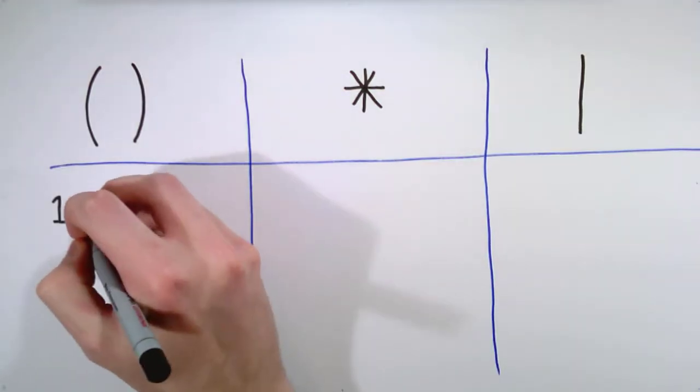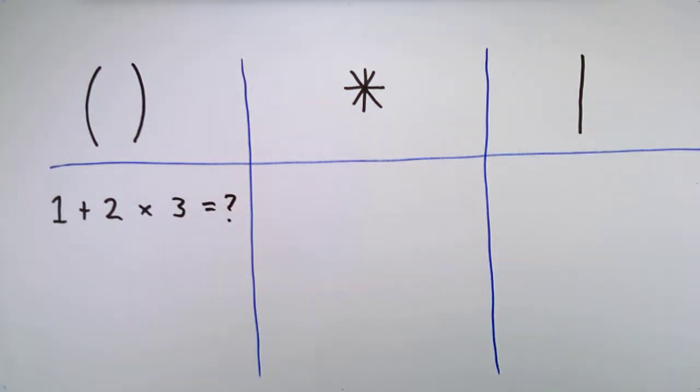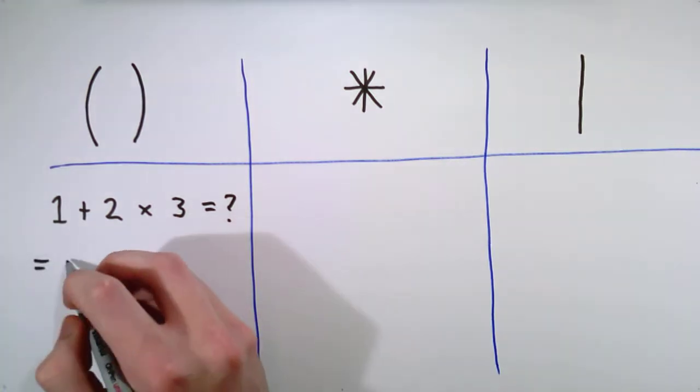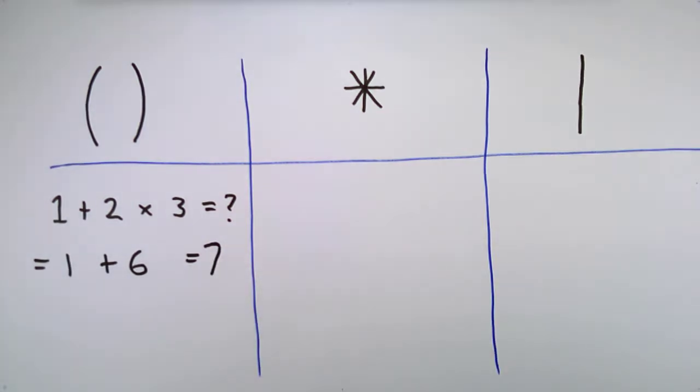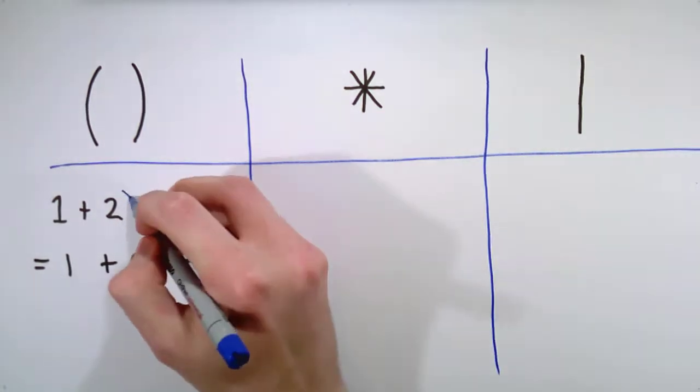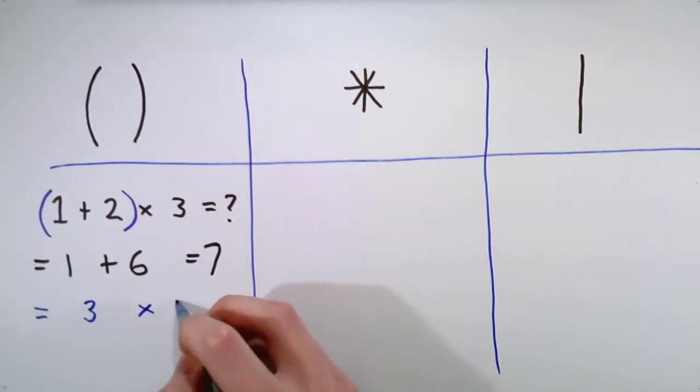In arithmetic, if we have the equation 1 plus 2 times 3, we follow the order of arithmetic expressions and solve the multiplication first, so we get 1 plus 6, which equals 7. But if we add parentheses around 1 plus 2, it holds the highest precedence, and so we get 3 times 3, which equals 9.